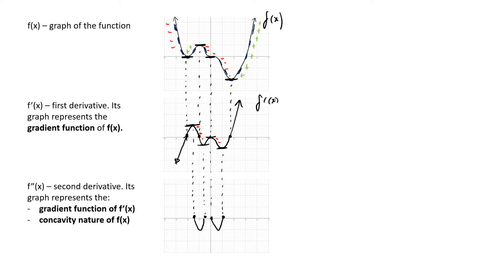When f dash x is increasing, f double dash x — the second derivative — is going to be positive, in other words above the x axis. So here's a quick sketch of my f double dash x curve.